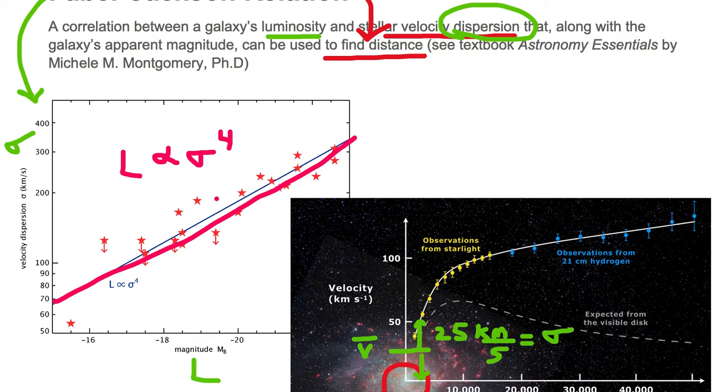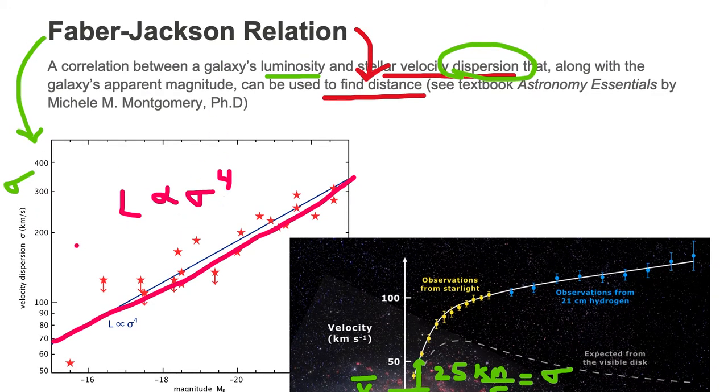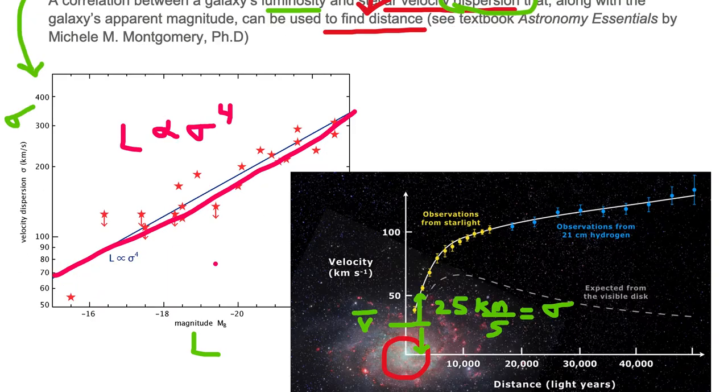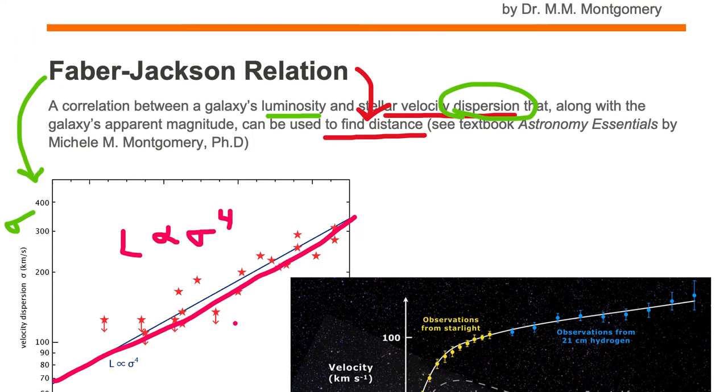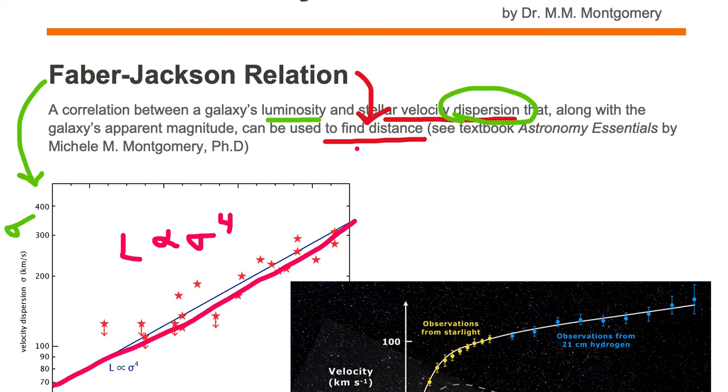So, the idea here is that if you observe an elliptical galaxy and you determine the dispersion of speeds in that elliptical galaxy, you can use this Faber-Jackson relation to read off the luminosity of that galaxy. And once you know the luminosity or the absolute magnitude of that elliptical galaxy, you can find distance so long as you have also measured the galaxy's apparent magnitude.